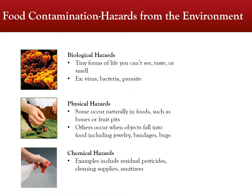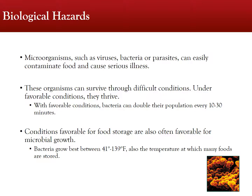Chemical hazards include residual pesticides on unwashed fruits or vegetables and cleaning supplies. Biological hazards can easily contaminate food and cause serious illness. Microorganisms are often very persistent and can survive even when measures are taken to kill them. Under favorable conditions, they thrive. For example, bacteria can double their population every 10 to 30 minutes.